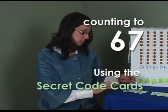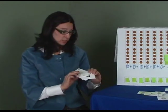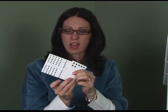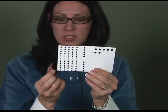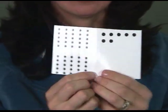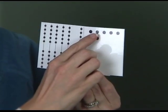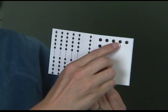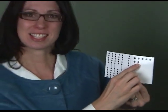Our next activity is to find 67 using our secret code cards. I have made the number 67 using my secret code cards. How do I know it's 60 and 7? 60 plus 7 is equal to 67. When I turn them over, I then find that I have 6 tens: 10, 20, 30, 40, 50, 60, 61, 62, 63, 64, 65, 66, 67. Take care.